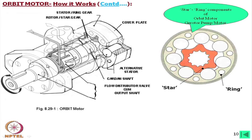This shaft is integral with a flow distributor valve. The oil comes through the outer body to a pocket, then through slots on this valve into the chamber. The passage allows oil to enter a chamber only when it is in expansion mode. When in compression mode, the oil comes out through this passage and exits. This is how the motor functions.